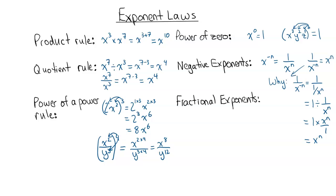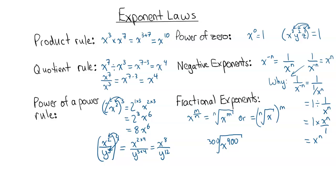The last one is fractional exponents. If I have X to the power of M over N, that's going to be equal to the Nth root of X to the M, or the Nth root of X all to the power of M. As a quick example: the 300th root of X to the power of 900. We write that as X to the power of 900 over 300. Well, 900 over 300 is just 3, so that is equal to X to the power of 3.